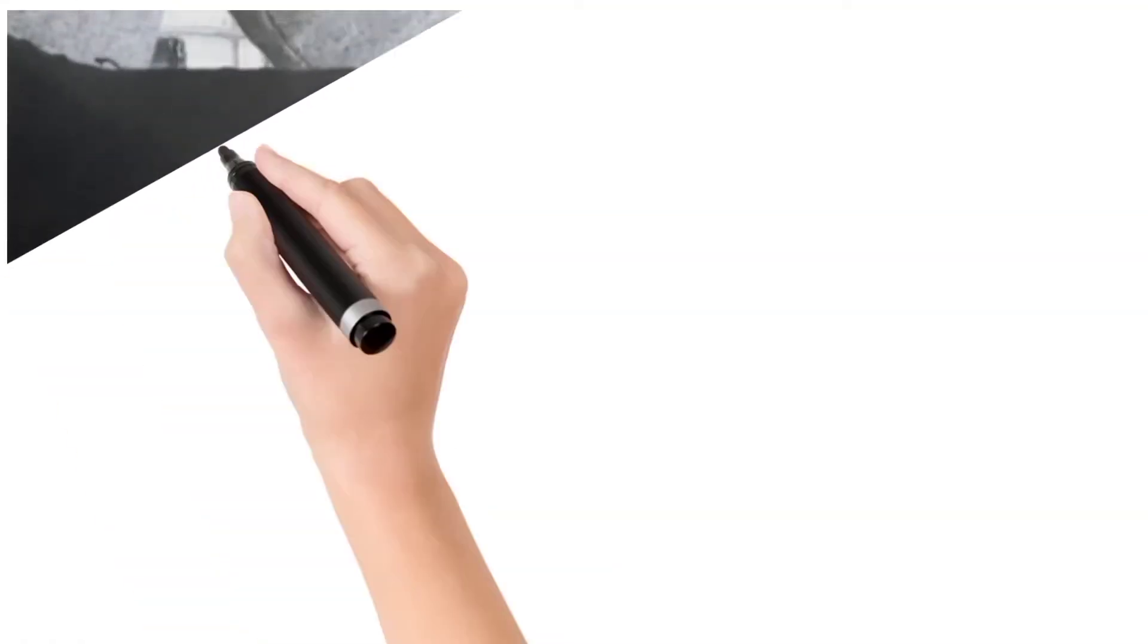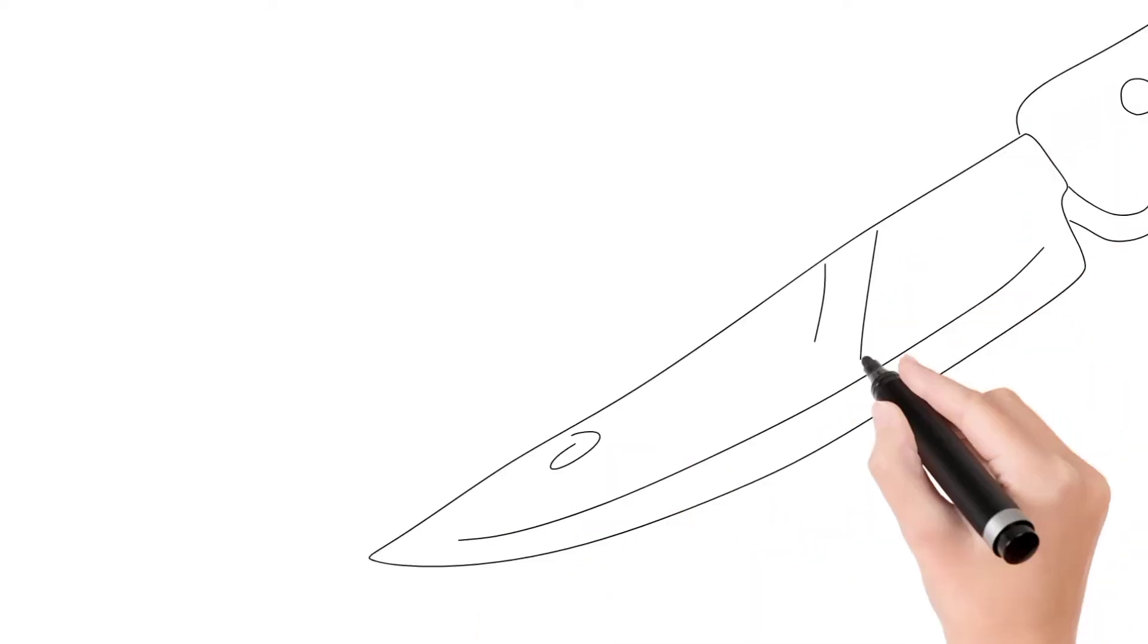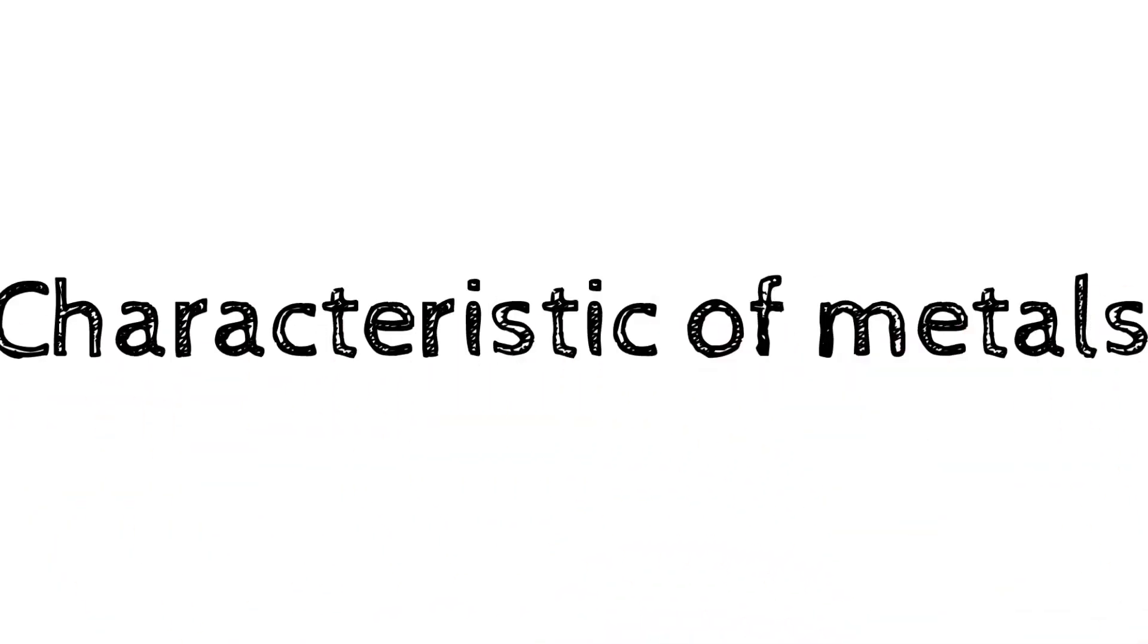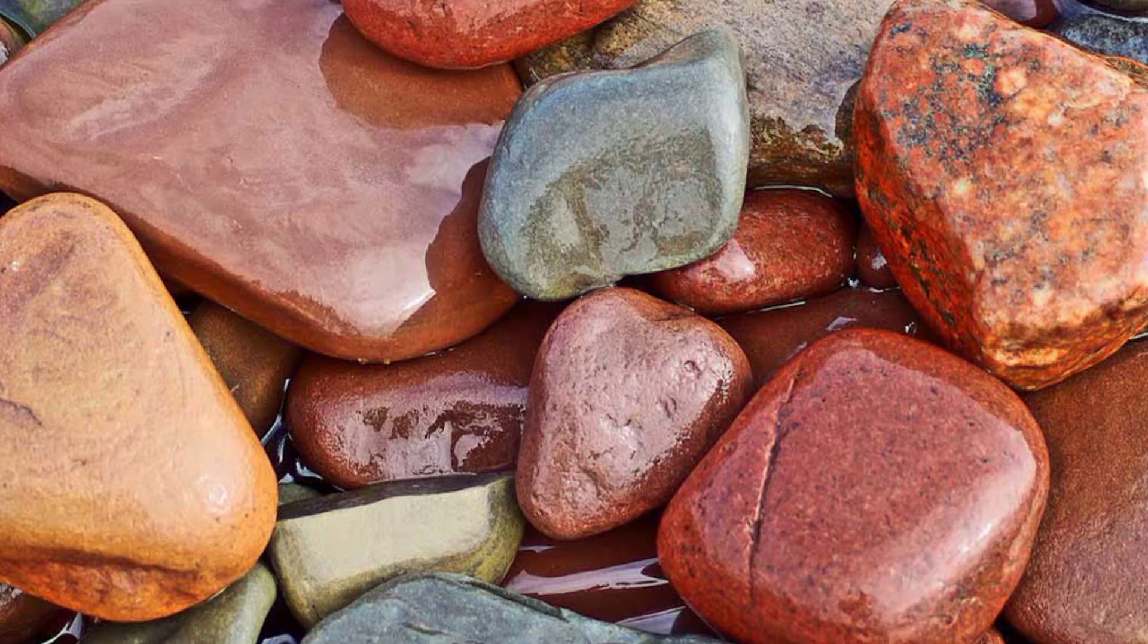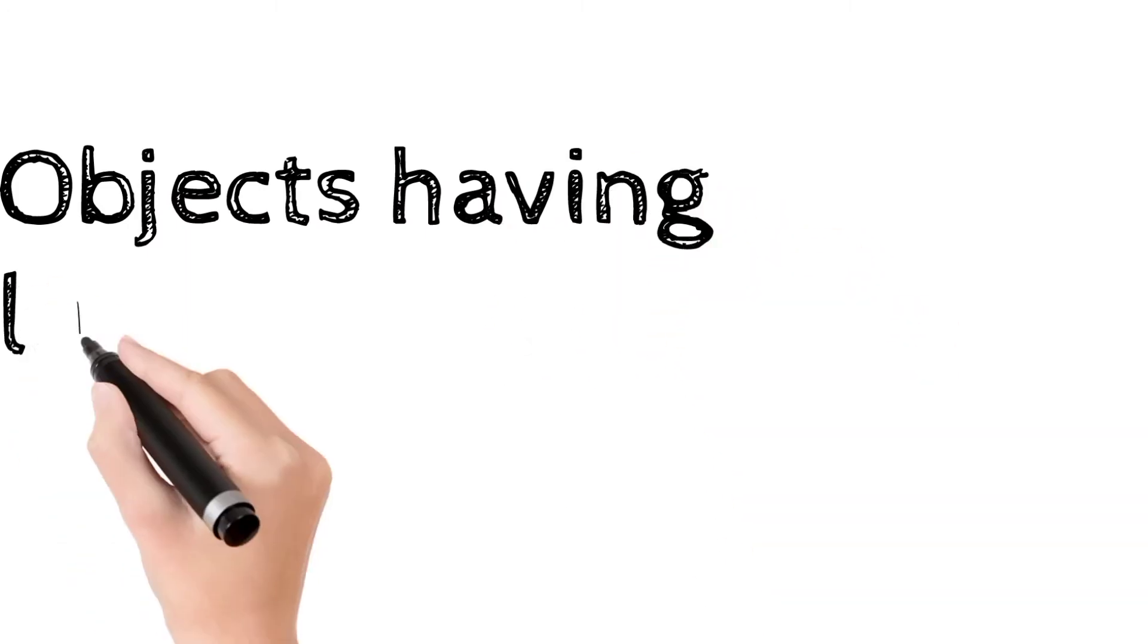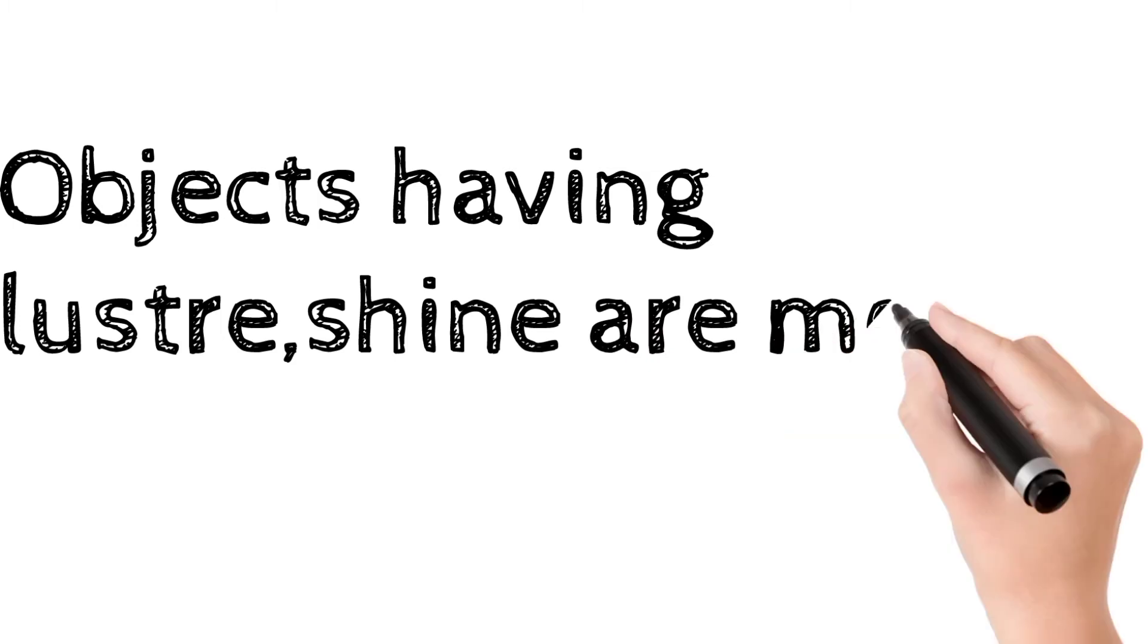When we cut any metal object, we get the edge of that and always that edge shines. It is a kind of characteristic of metals. It means we can say those substances, those materials, those objects which are having a luster, a shine, are called metals.